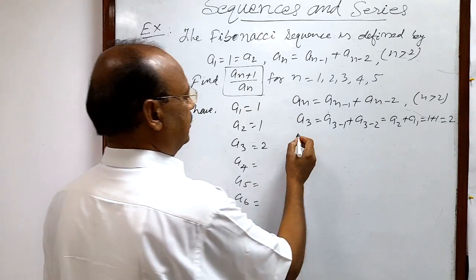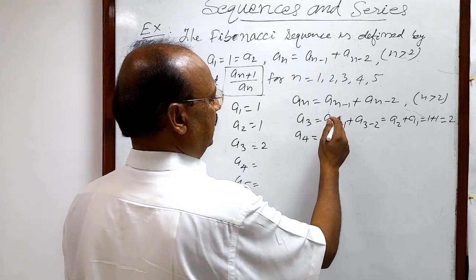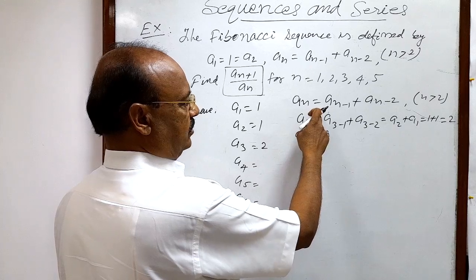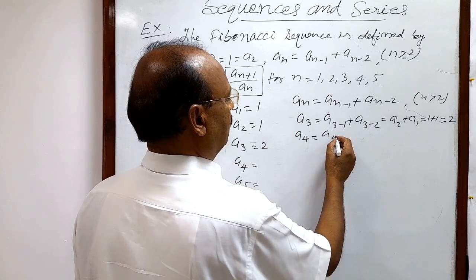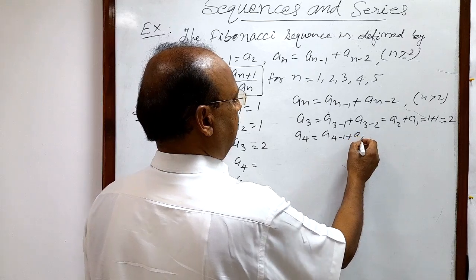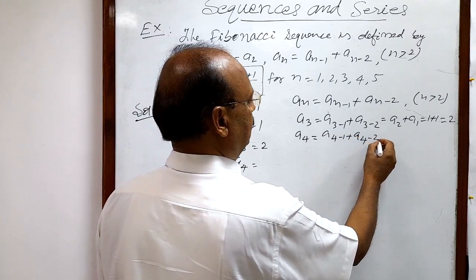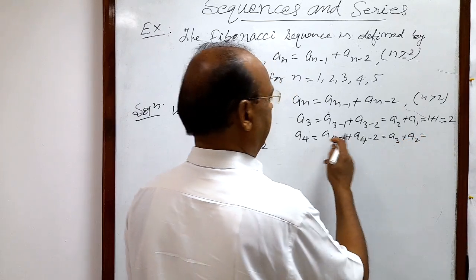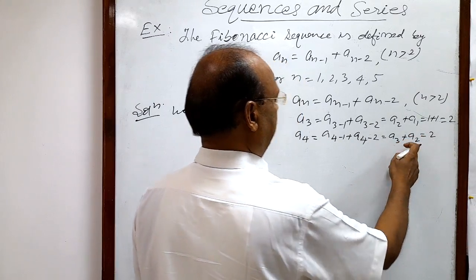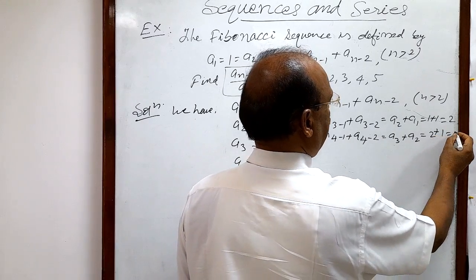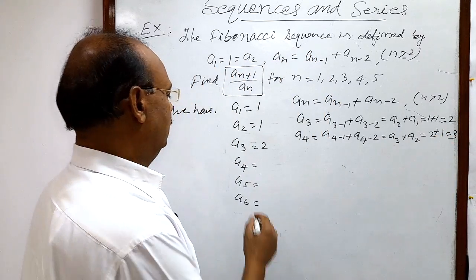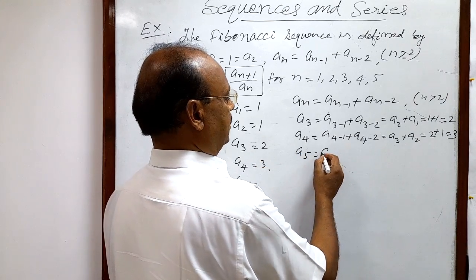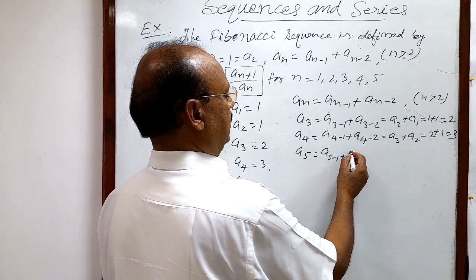Similarly, we find a4. Substituting n = 4 in the recurrence relation: a4 = a(4-1) + a(4-2) = a3 + a2. a3 is 2 and a2 is 1, so 2 + 1 = 3. Therefore a4 = 3.